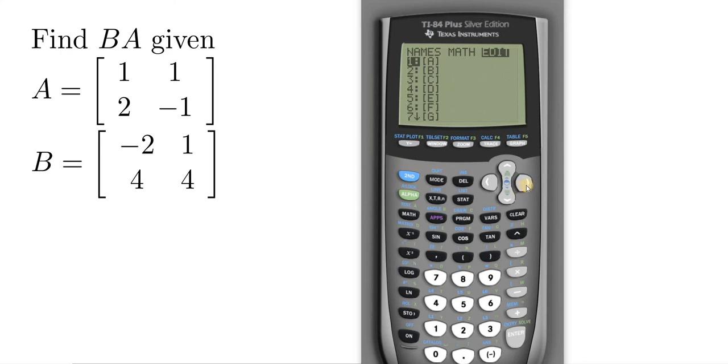So now that we're in the edit menu, and I got there by hitting the right arrow key, I'll go ahead and select A. So first it asks for the dimension. The first number is the rows, and the second number is the columns. So this matrix has two rows and two columns. So I'm going to enter two, then hit the right arrow key, and then two again, and then enter.